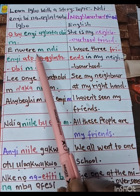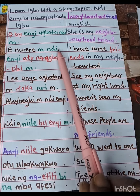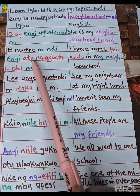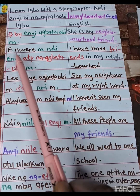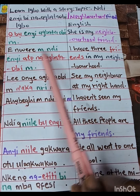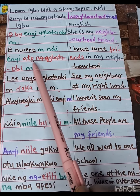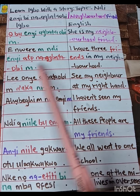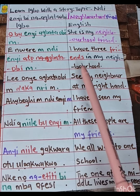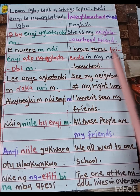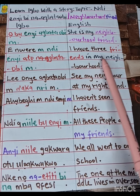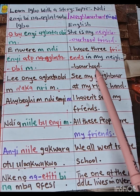Enwerem ndi enyi ato na abatobi. I have three friends in my neighborhood.